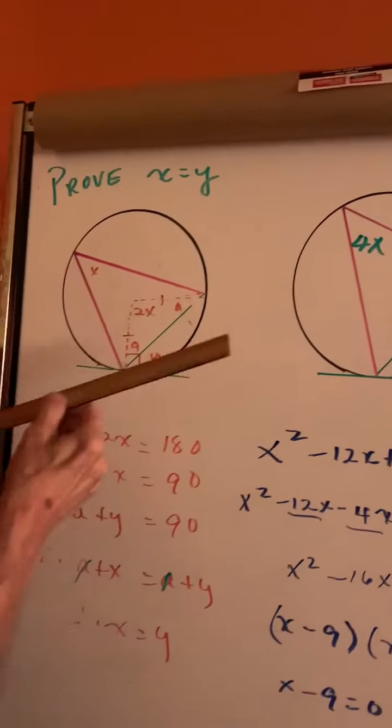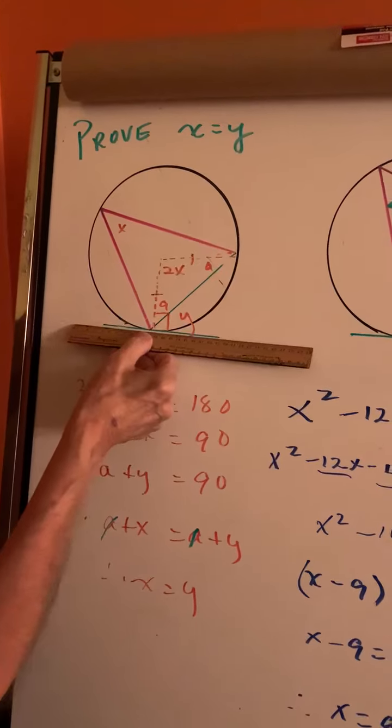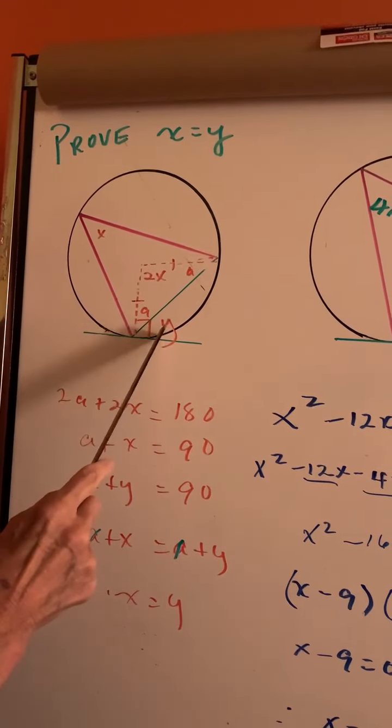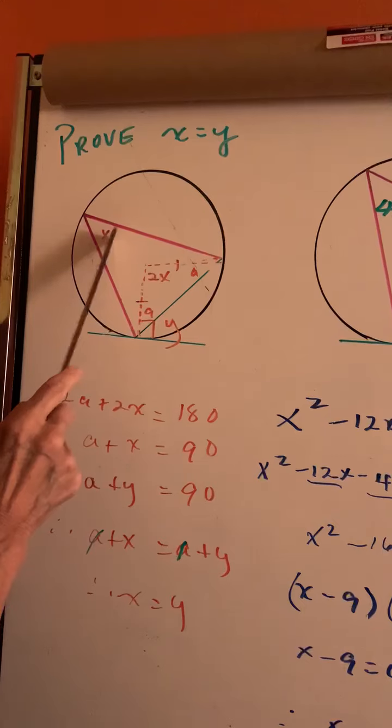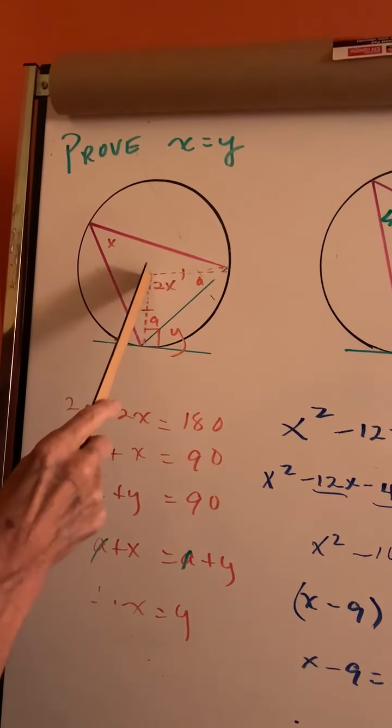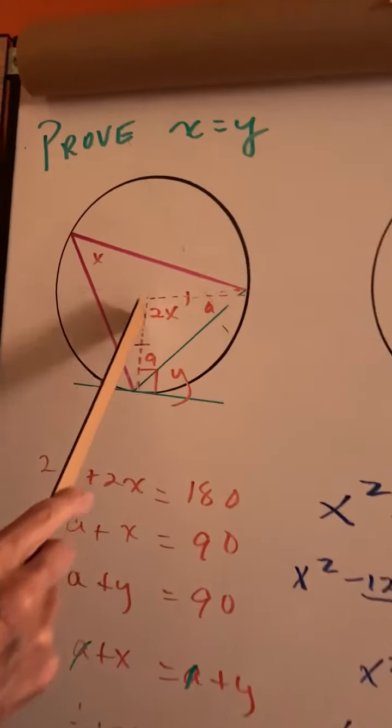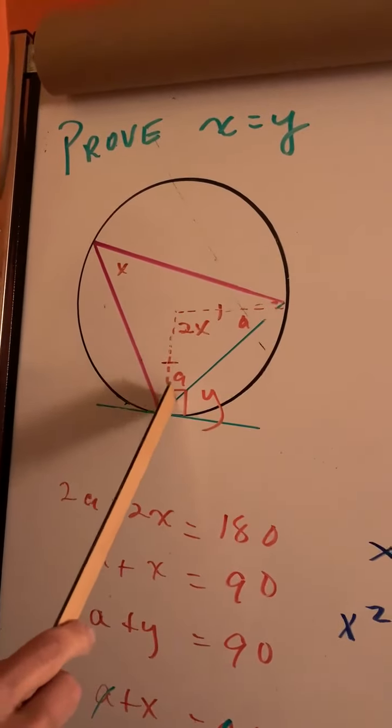So if you look over here, here's my tangent, here's my chord. We want to show that angle y is equal to the inscribed angle. Drop a perpendicular from the center of the circle to the tangent, it meets at right angles.